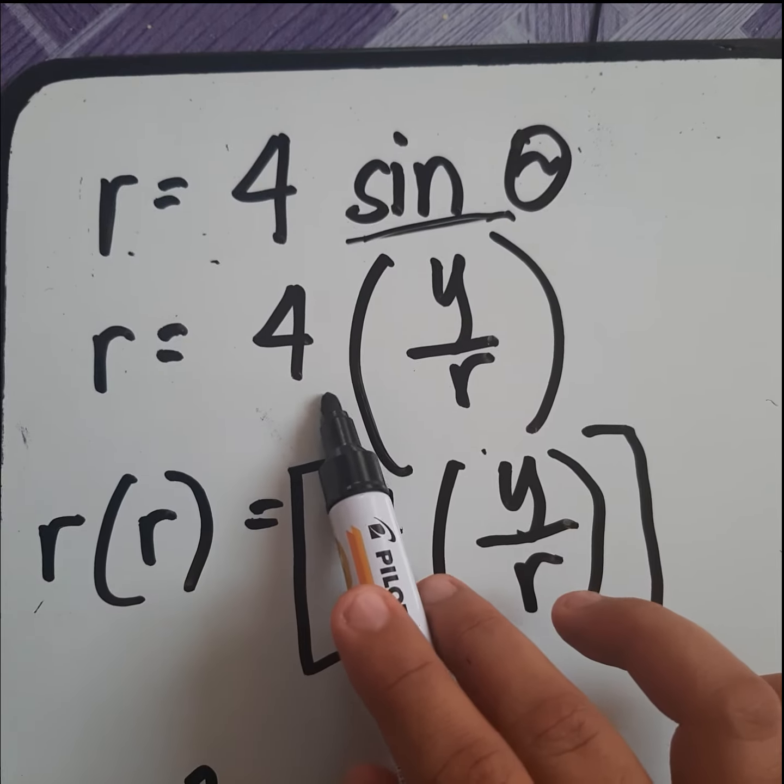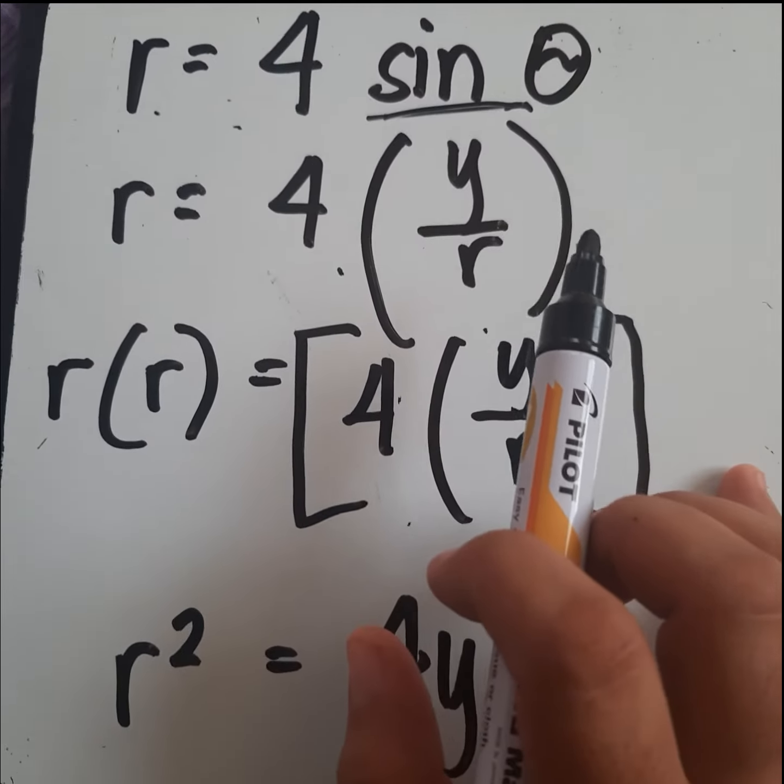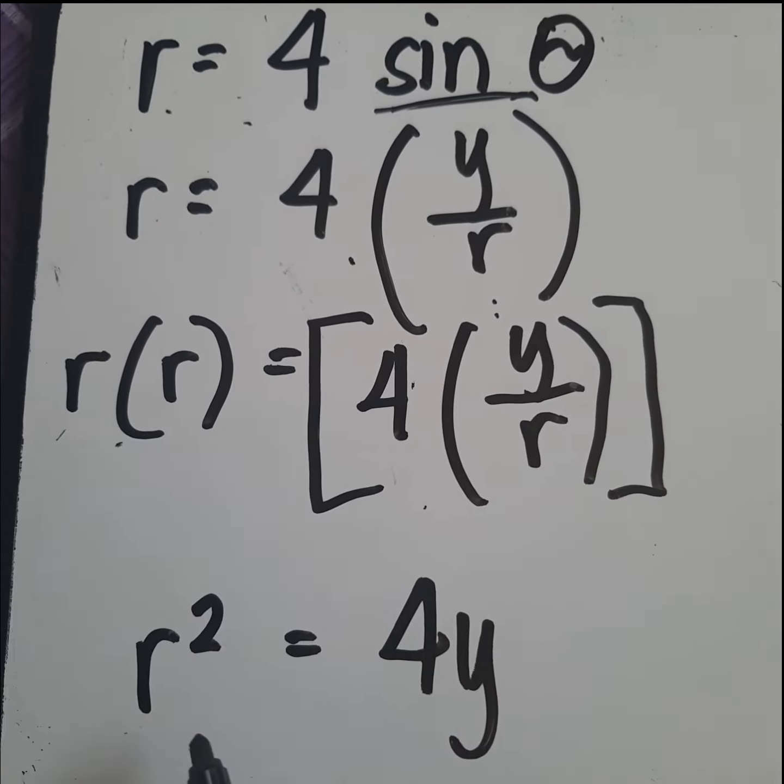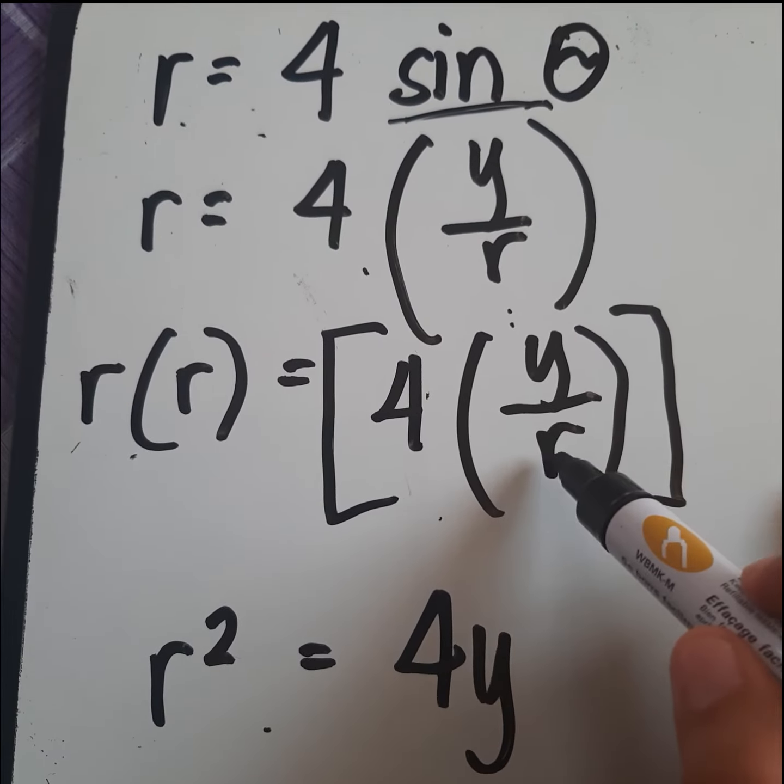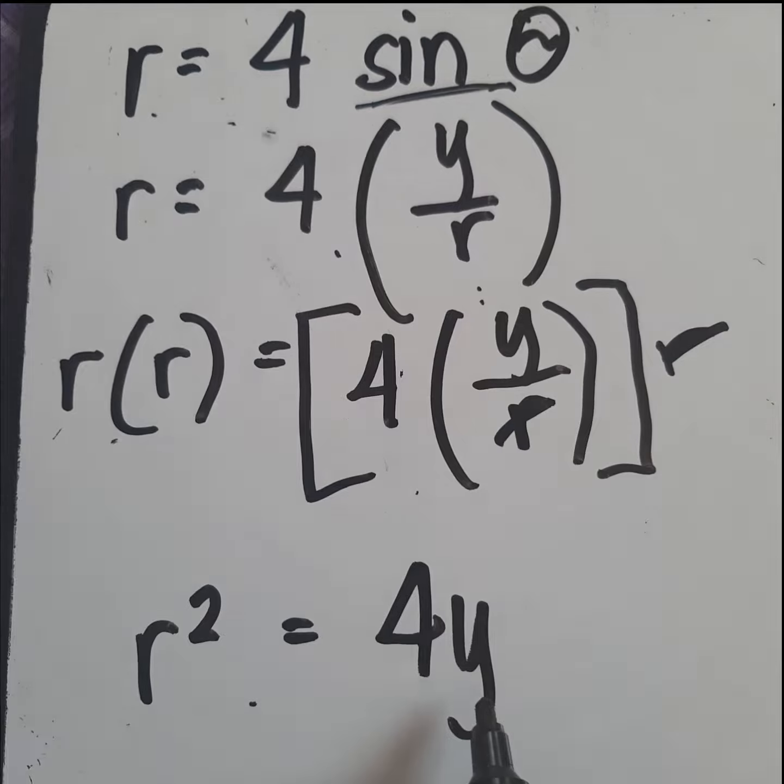So r is equal to 4 open parenthesis y over r closed parenthesis. We need to multiply r into both sides. So r times r is equal to r squared, and then we need to cancel r over here. So r squared is equal to 4y.